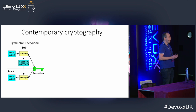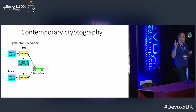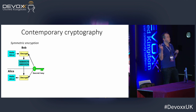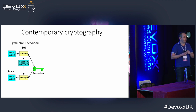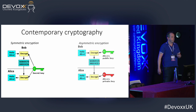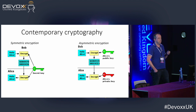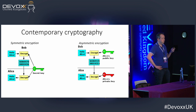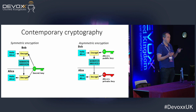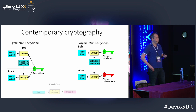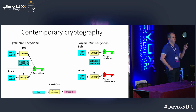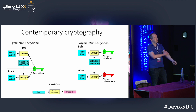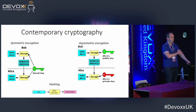The first is symmetric encryption, where two participants — Alice and Bob — want to encrypt messages to each other using a shared key. They both use the same key to encrypt and decrypt messages. The second is asymmetric encryption, where Bob gets a public key from Alice; she keeps her private key for herself. Bob can use the public key to encrypt messages and send them to Alice, and Alice uses her private key to decrypt. The last is hashing — taking an arbitrary sequence of bytes and generating a fixed-length binary value.